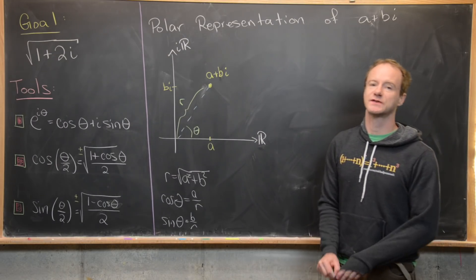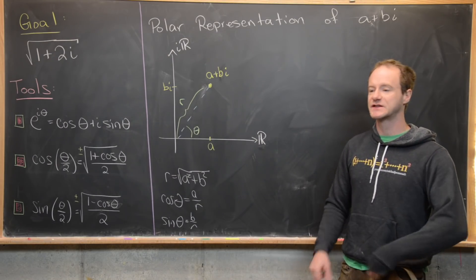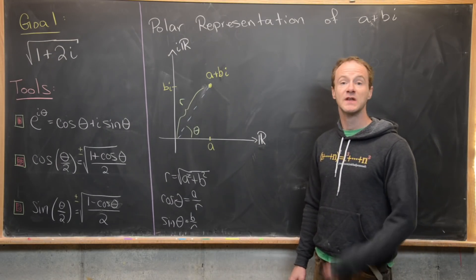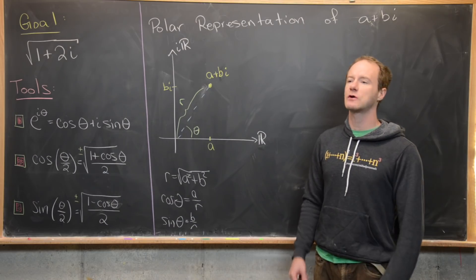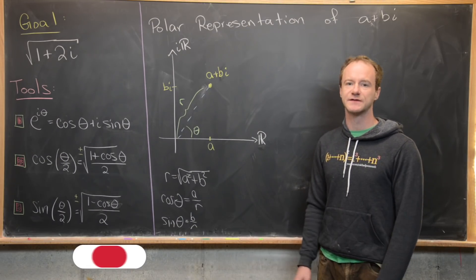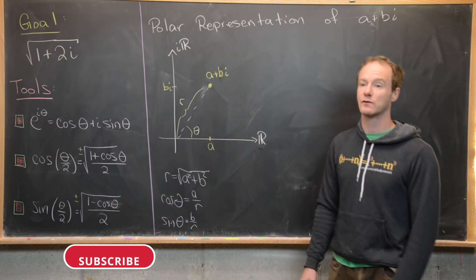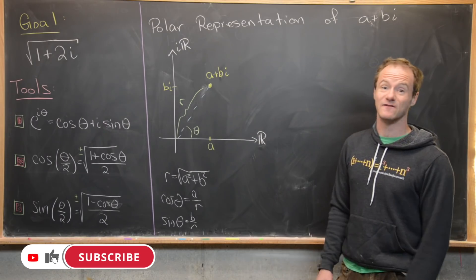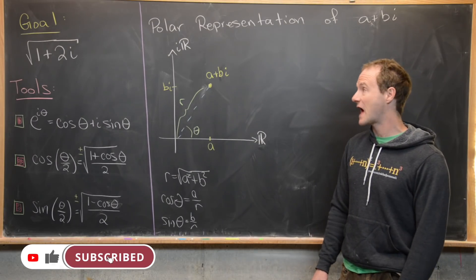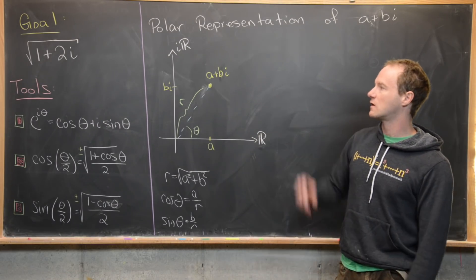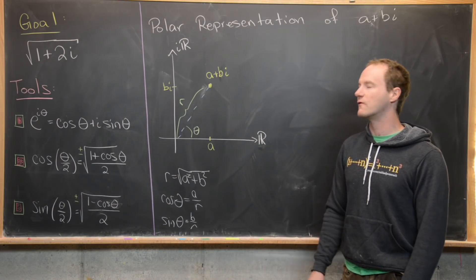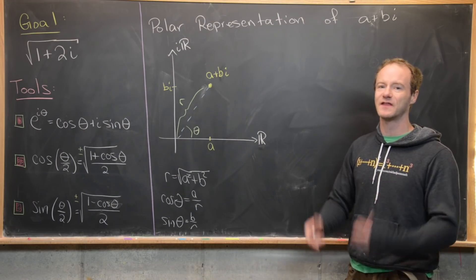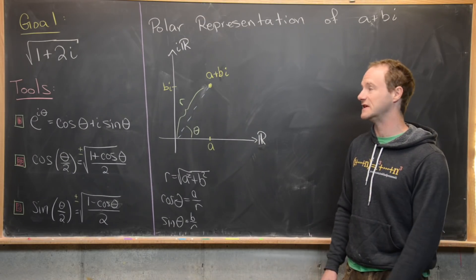Here we're going to look at a nice result involving the square root of a complex number. A few years ago it was pretty popular to make videos of taking the square root of i and finding the value of that. In this case we're going to look at the square root of 1 plus 2i, and I think this result is even better.